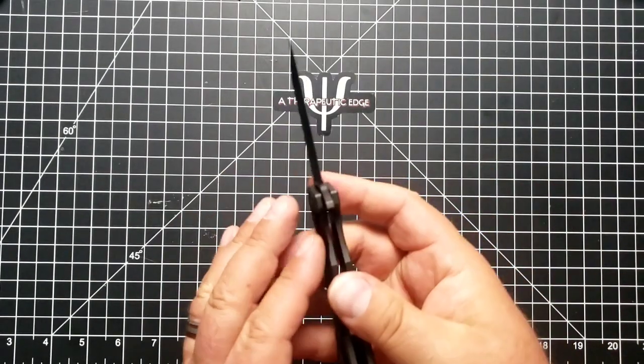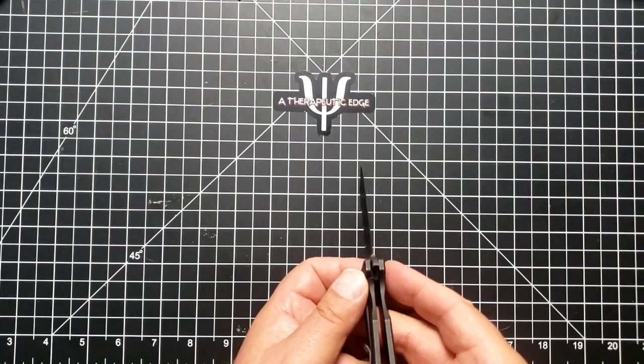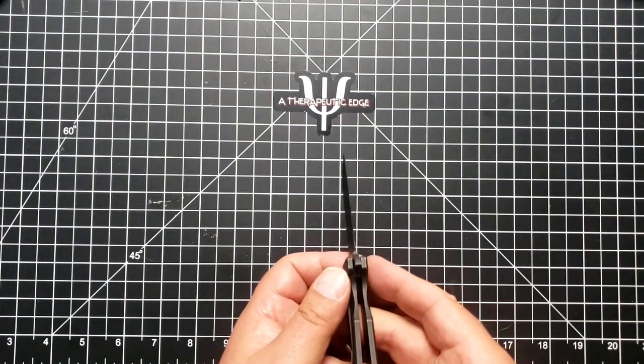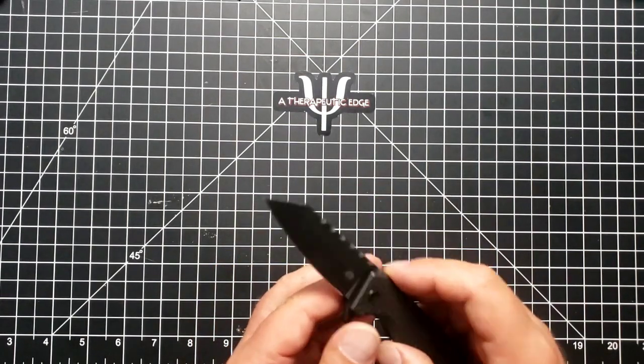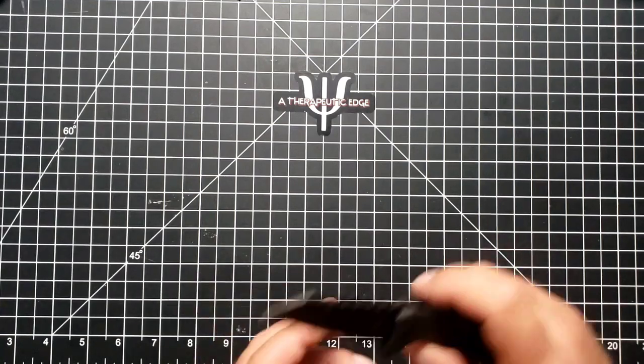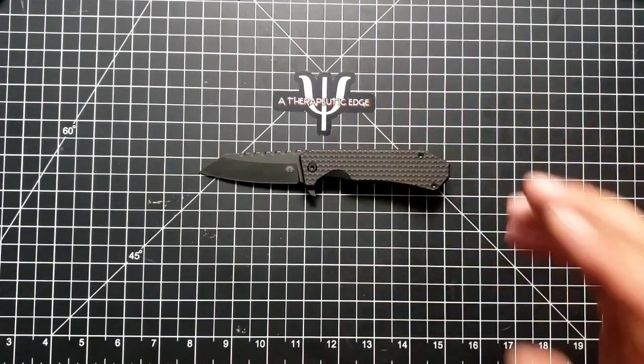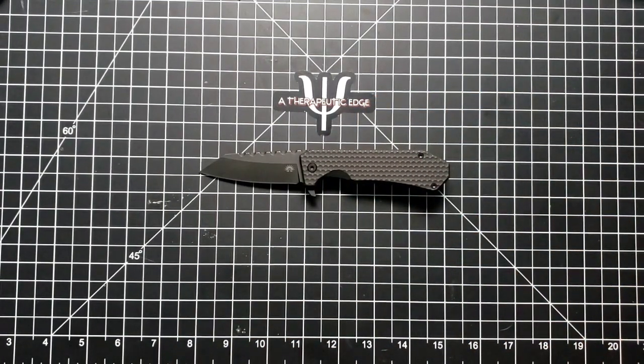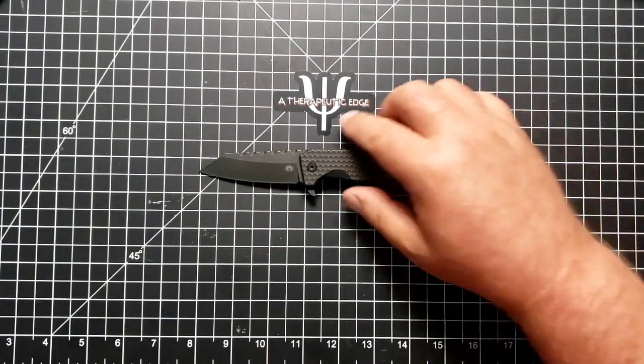It is a frame lock, and the lockup is at probably about 30% to 35%. This is an excellent small pocket knife. They've done just a marvelous job in both design, and of course, Wii has done an excellent job in execution.